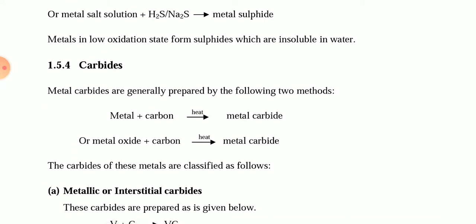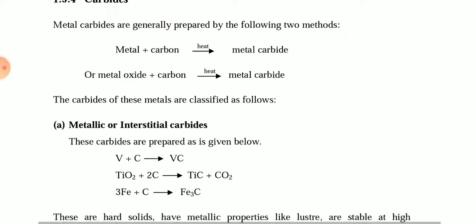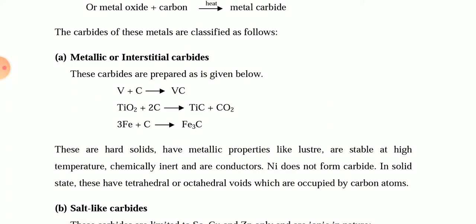Metal carbides are generally prepared by two methods: combining metal and carbon and heating them to give the metal carbide, or taking a metal oxide with carbon and heating it to get the metal carbide. Carbides of these metals are classified as metallic carbides. For example, vanadium plus carbon gives VC; TiO₂ plus two molecules of carbon gives TiC plus CO₂; and iron plus carbon gives Fe₃C. These are hard solids with metallic properties.